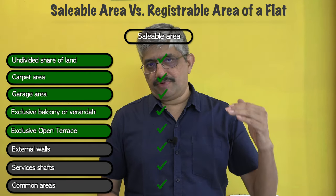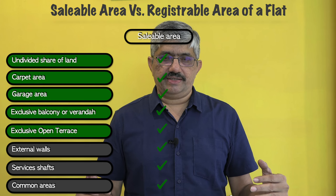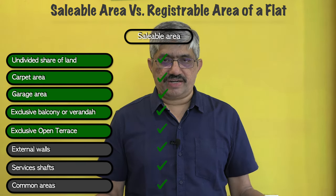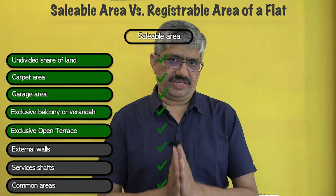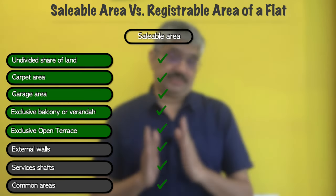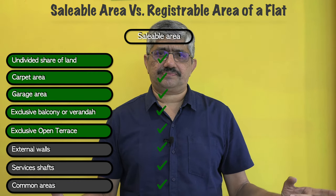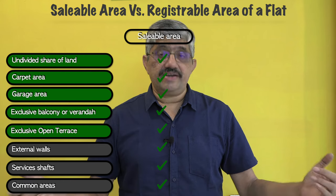What is the saleable area in case of an apartment? The saleable areas are: undivided share of land, carpet area, garage area, exclusive balcony areas, exclusive veranda areas, exclusive open terraces, and also common areas such as outer walls — that means external walls — duct areas, service shops, common areas such as lift area, staircases, lobby areas and corridors.